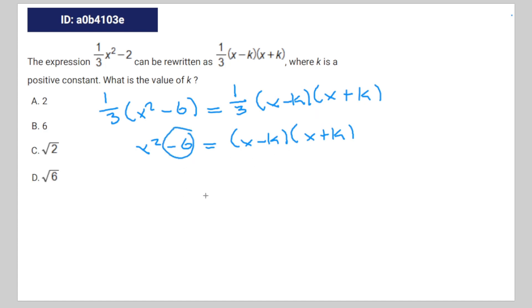Therefore, negative k times k is going to be equal to negative six. You can rewrite that as negative k squared is equal to negative six. Divide by negative one and you're going to get k squared is equal to six.